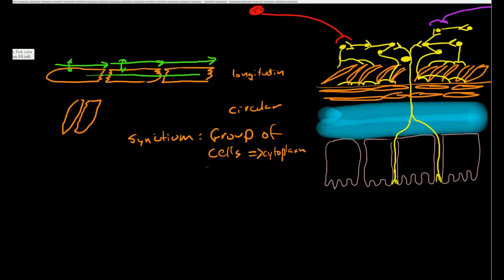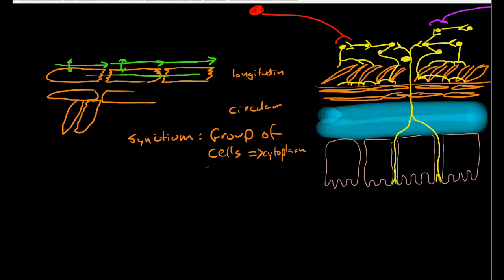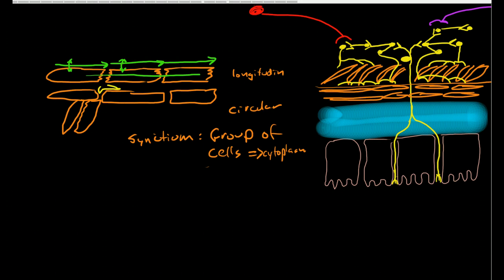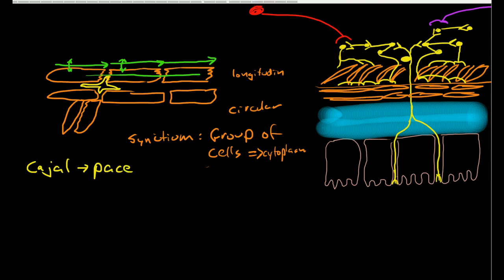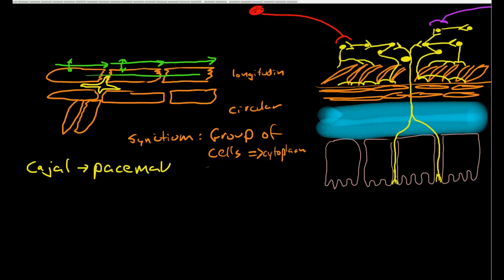What's interesting with the smooth muscle of the GI tract is we have these little cells mixed in with the smooth muscle cells called Cajal cells. These Cajal cells are the pacemaker cells of the smooth muscle of the gut.